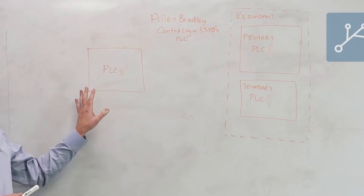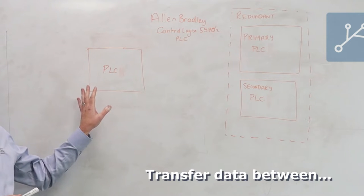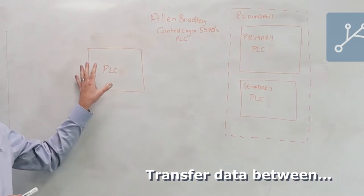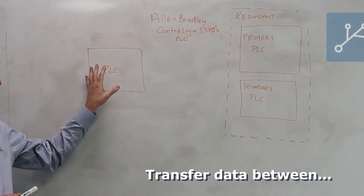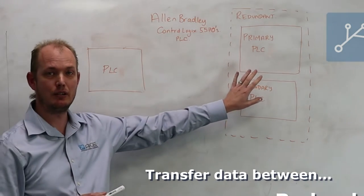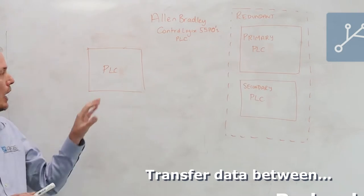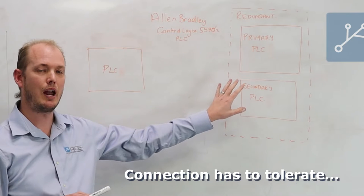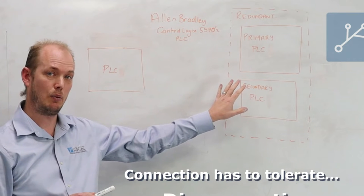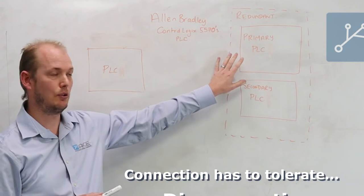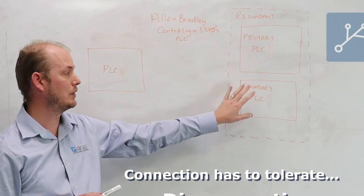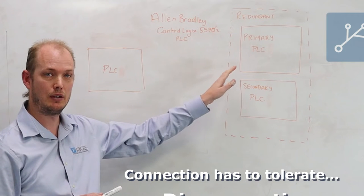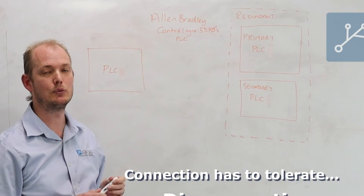So what we've got in our application is we need to be able to transfer data to and from a single Control Logix to a redundant pair Control Logix, and the connection has to be able to tolerate drops in network connectivity and also when the primary and secondary PLCs switch over due to a CPU fault, for example.